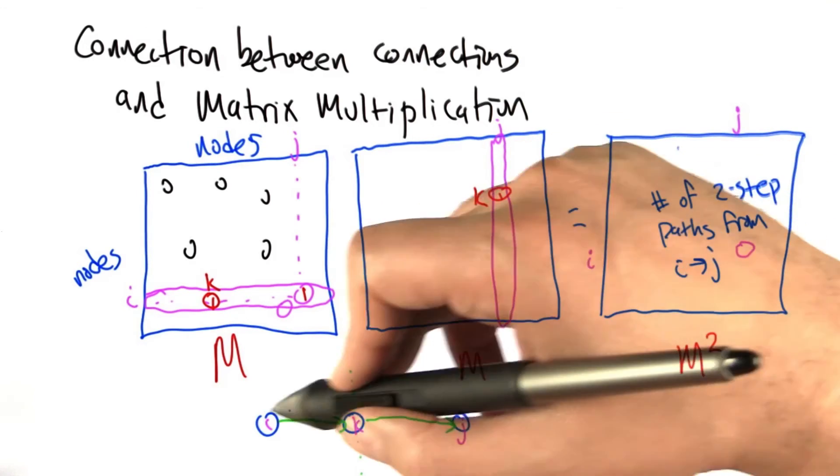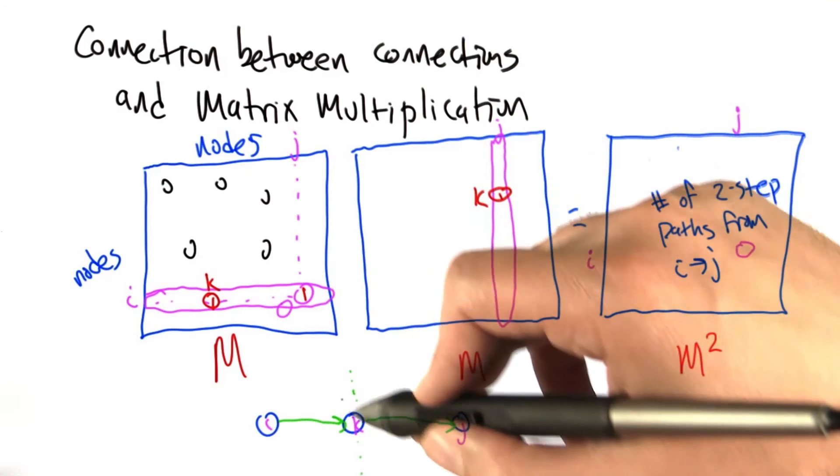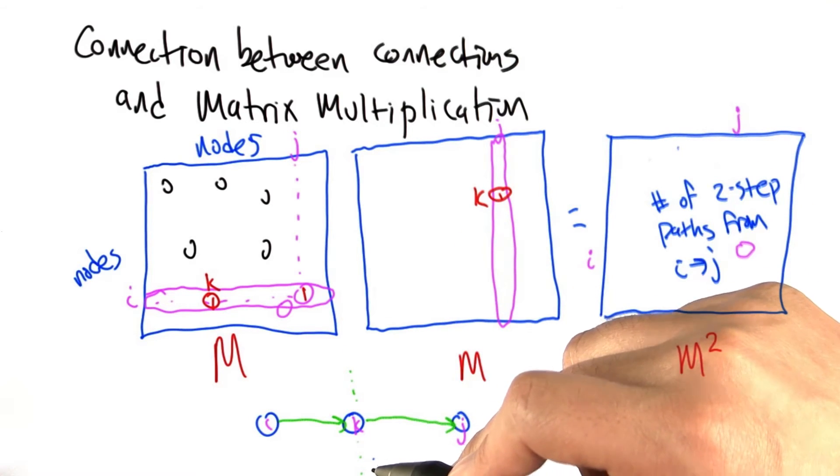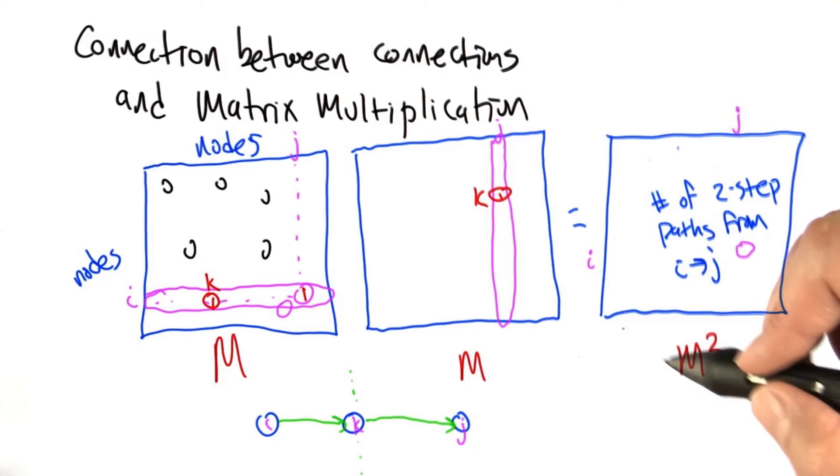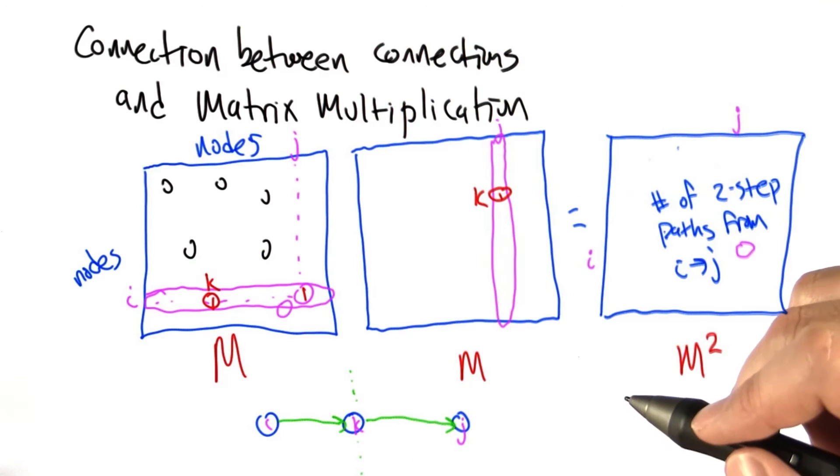In the case of the bipartite graph of the Marvel comic book characters, any two-step path that starts at a character goes through a comic book and then a character. So this is counting up exactly the number of comic books that i and j are both in. So there we go. The square of the matrix, which represents the connections of the graph, actually gives us the same answer.